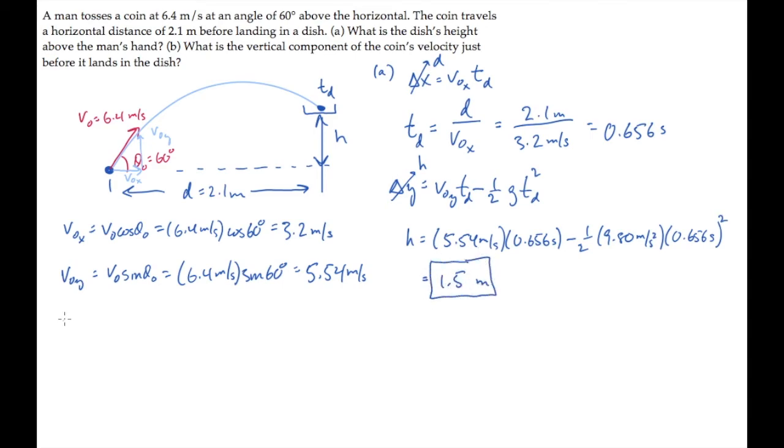Part b asks us for the vertical component of the coin's velocity just before it lands in the dish. We can find that using the time-dependent velocity kinematic equation. Substitute the initial y component of velocity and the time that it takes the coin to reach the dish, and you find that vy equals negative 0.89 meters per second. That negative sign shows us the coin hits the dish when it's moving down.